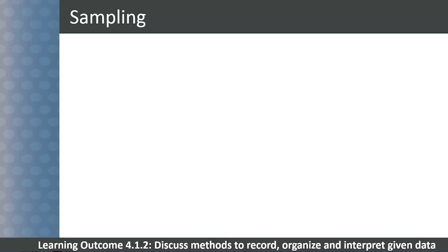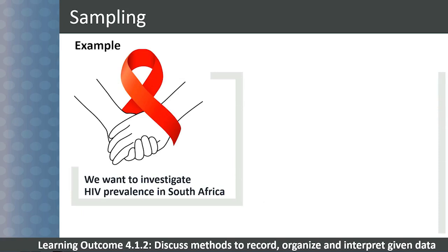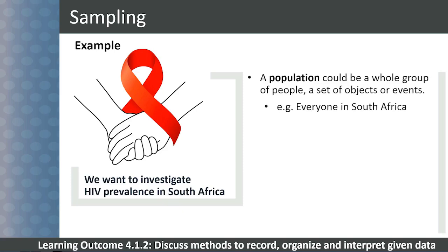Sampling. Let's consider an example. Say we wanted to study the HIV prevalence in South Africa in a particular year. A population could be a whole group of people, a set of objects or events. Our population would be everyone in South Africa.